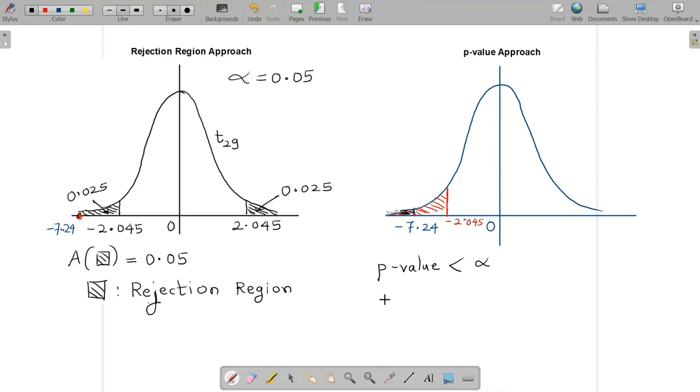Or maybe I can say that p-value by two for two-tailed is less than alpha by two. So hence, even if we adopt this p-value approach of p-value less than alpha, then reject H0, then still that will be fine.